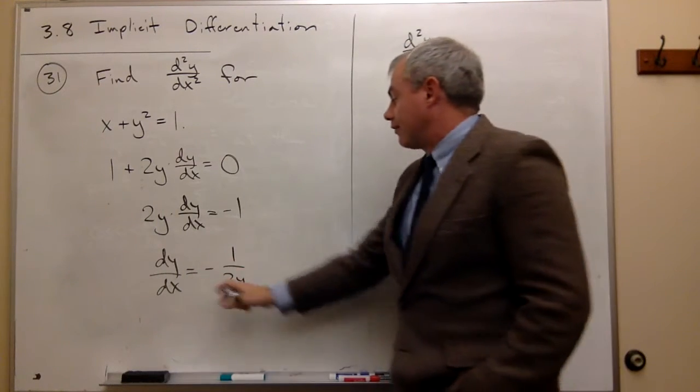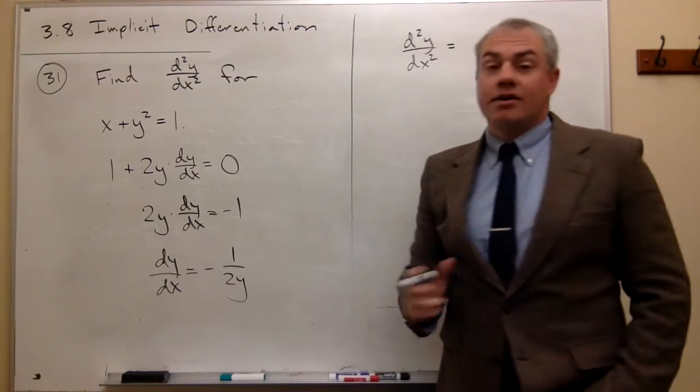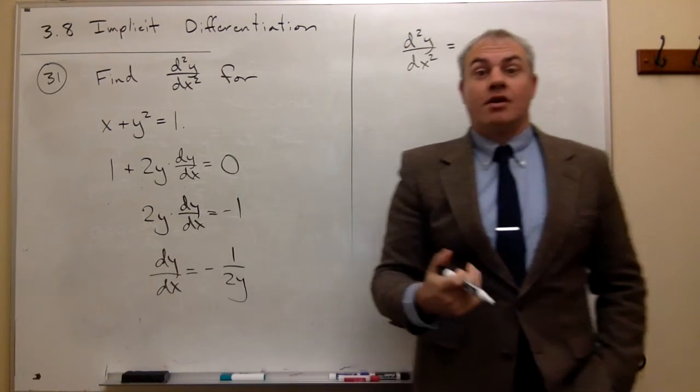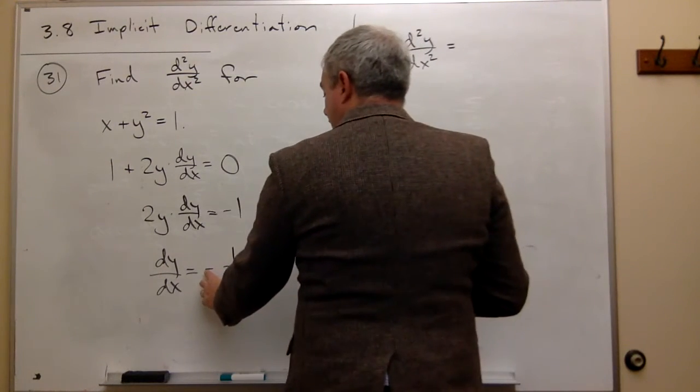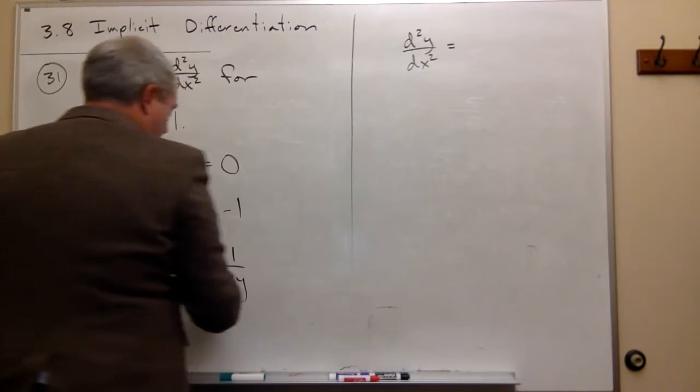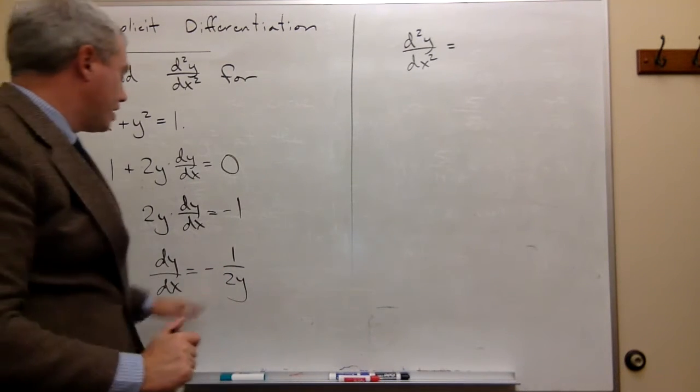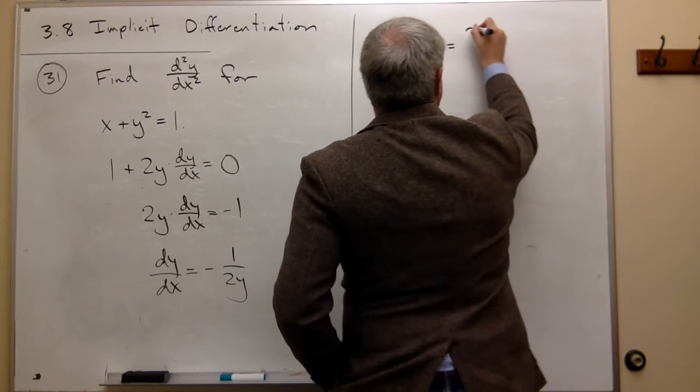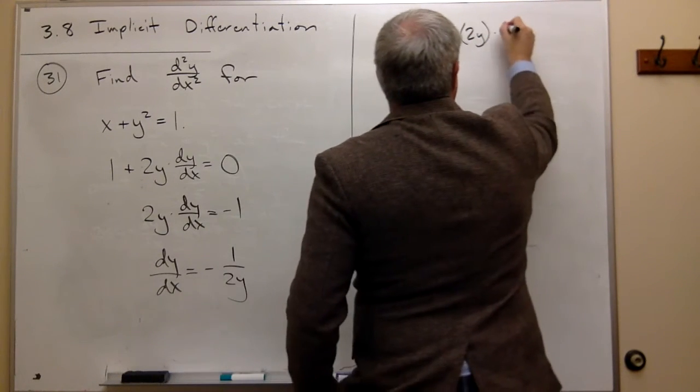But this side is a quotient. So we can use the quotient rule on it. So I have negative 1. Let's just put this negative up with the 1. So I have a negative 1 on top and a 2y on the bottom. So I get the bottom, 2y, times the derivative of negative 1, which is 0,